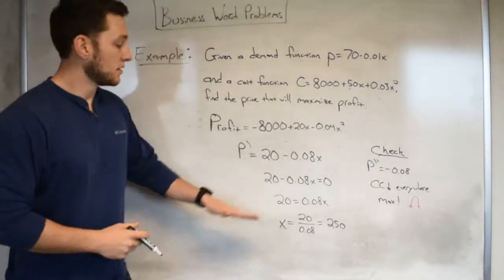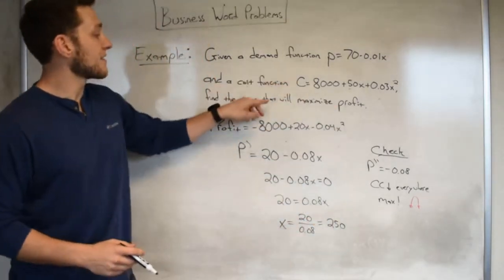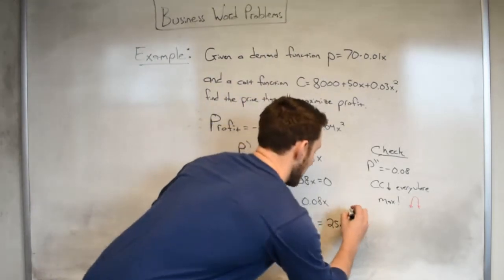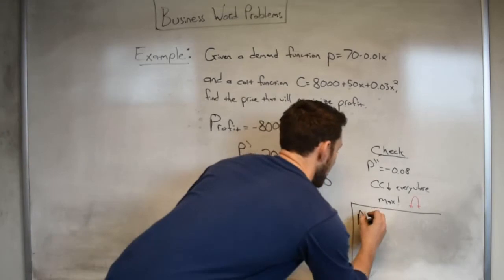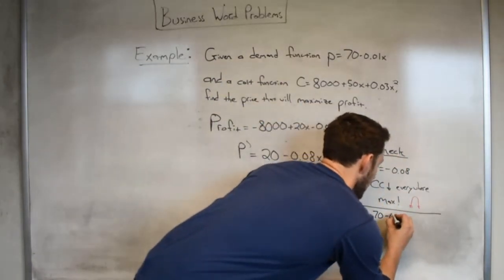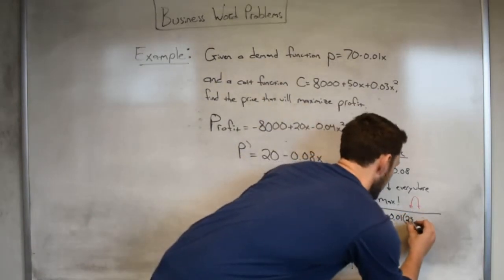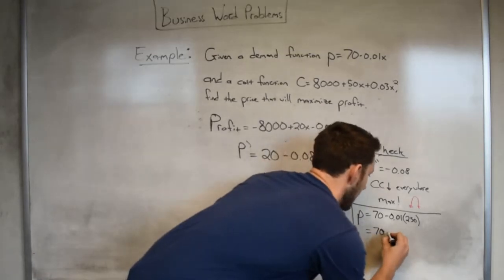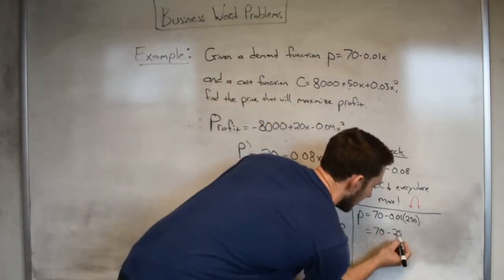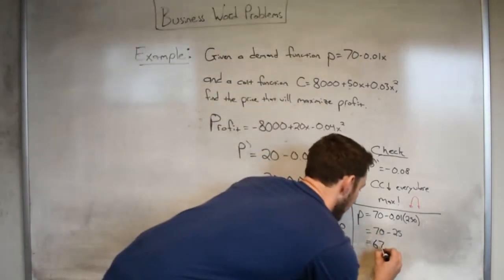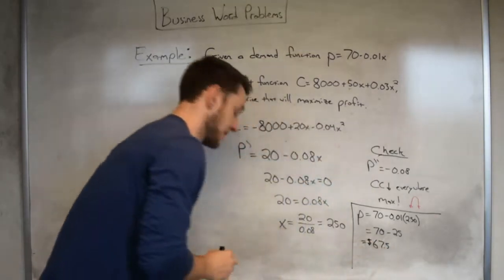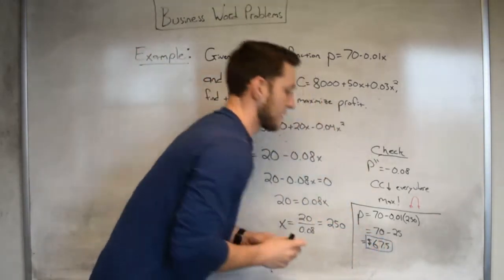So the very last thing that we would need to do in order to get our price would be to actually plug in. Since we're after price, what price will maximize profit? We want to plug in 250 to the function that will give us price. So last but not least, to actually get our answer, we would say price is equal to 70 minus 0.01 times 250. That will give us 70 minus 2.5, which will equal 67.5. From there, we go ahead and write this as dollars because we are talking about a price. And that will ultimately be our answer, $67.50.